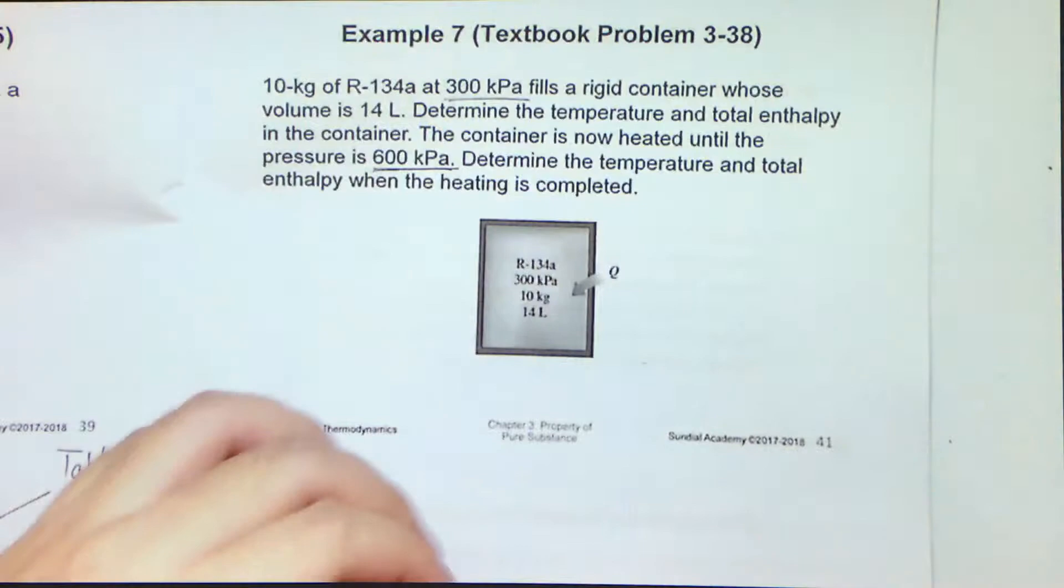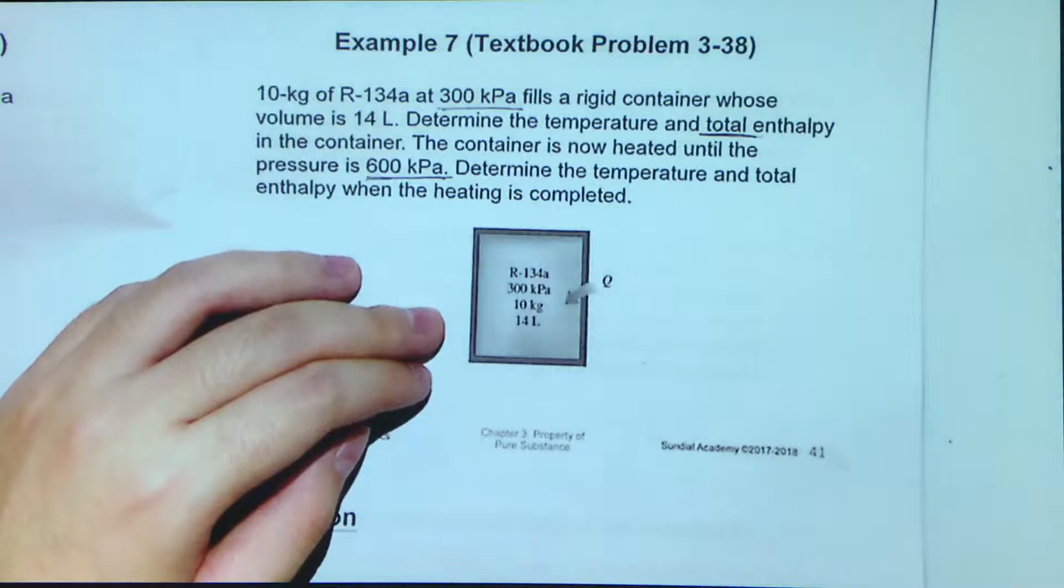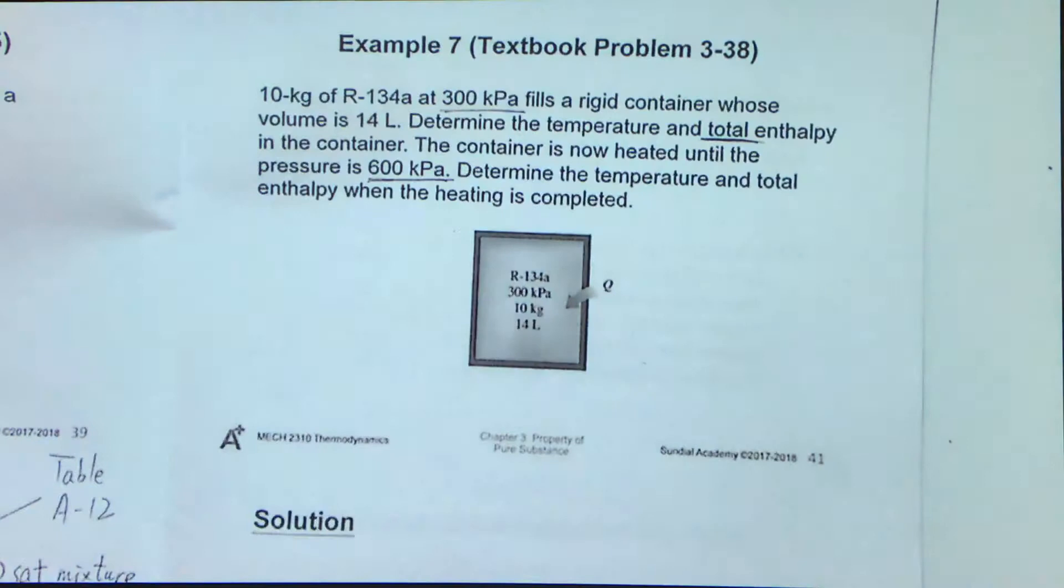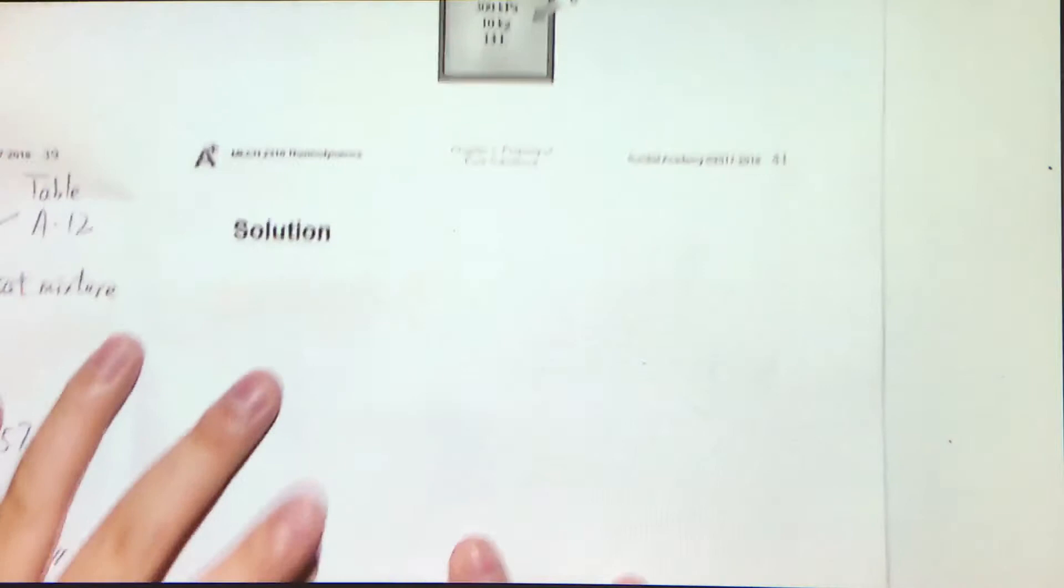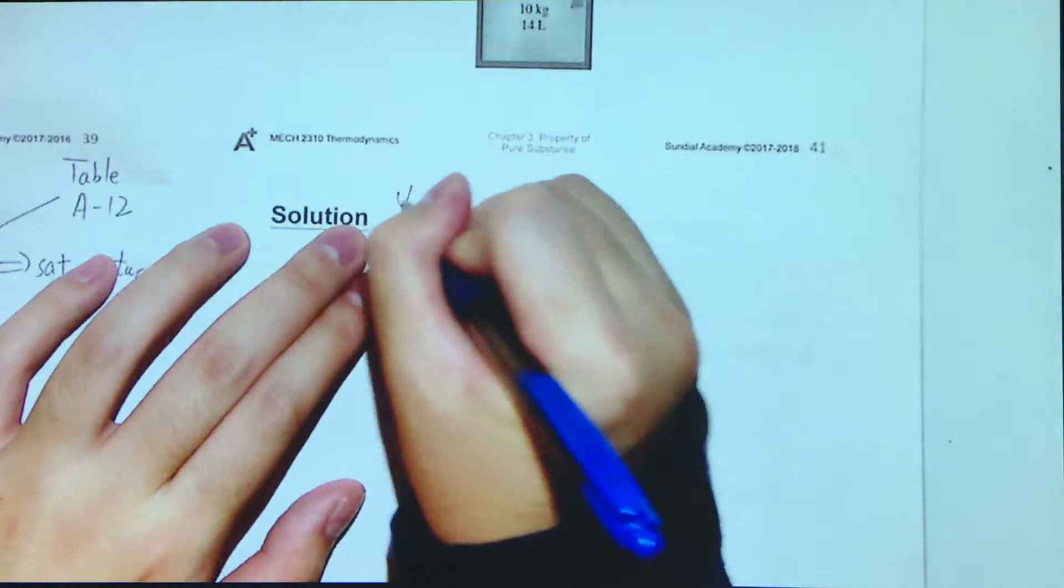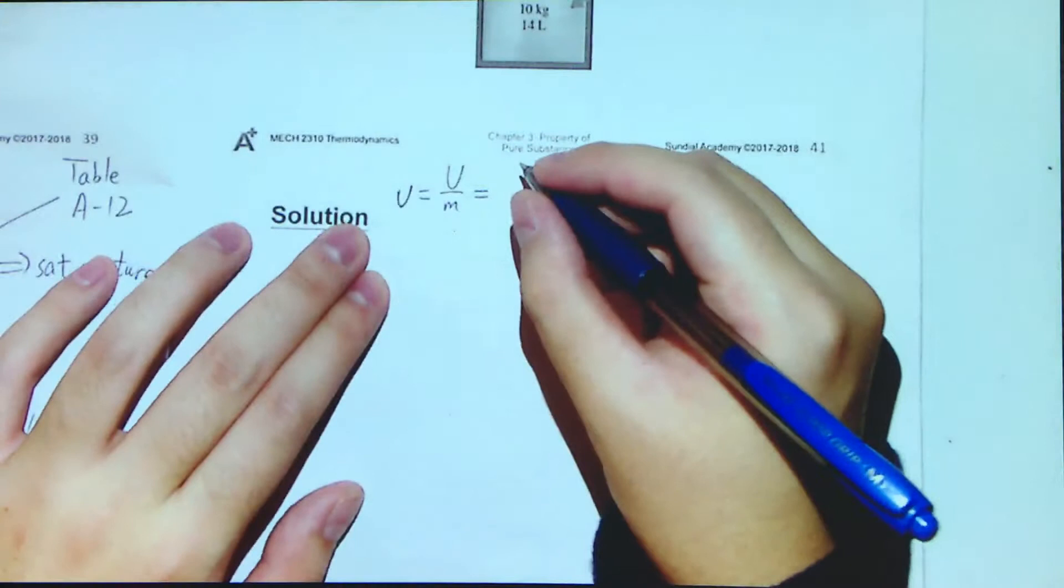And here I need to also remind you one thing. This is total enthalpy. We need to find out total enthalpy, that means big letter H. So after you find out the specific enthalpy, you need to multiply it by the total mass to finish the problem. First of all, let us compute the specific volume first in order to determine what the state is.